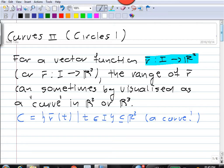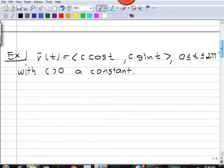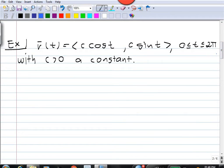although in the examples we consider we'll get nice curves. So the example I want to look at is this one: r(t) is equal to (c cos t, c sin t).